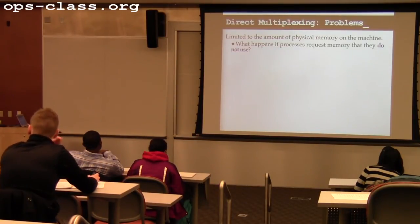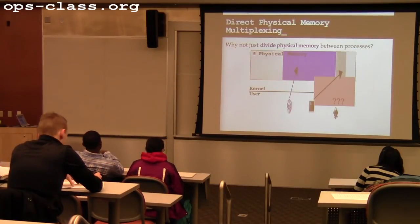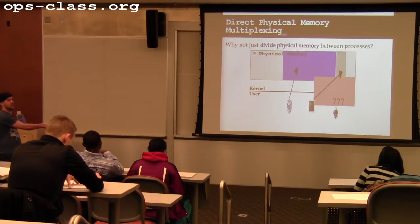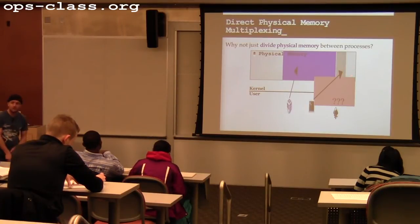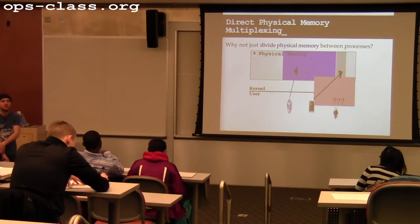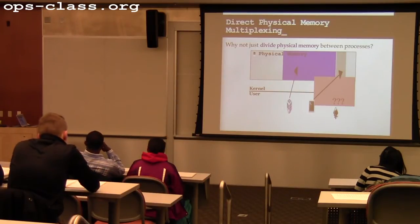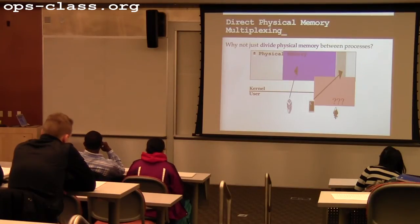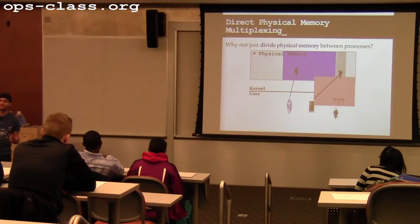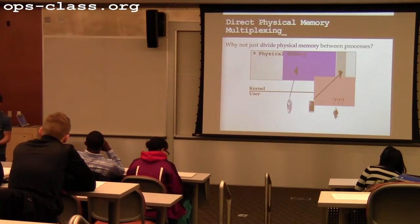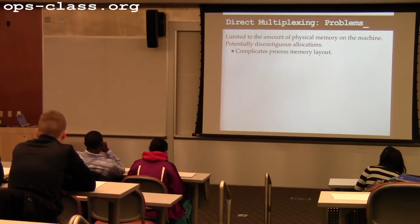In the case where two free pieces together are big enough to satisfy an allocation but neither alone fits, that's external fragmentation — the memory is split up and fragmented. If VirtualBox isn't using most of its allocation, and I gave it a big piece of memory but can't reclaim the unused portion inside, that's internal fragmentation — it's fragmentation inside of allocations I've already made.